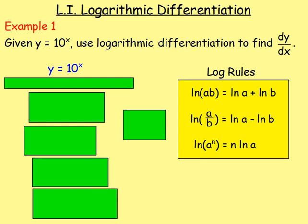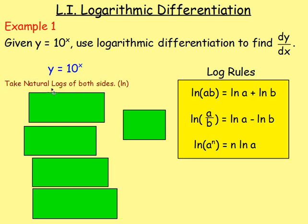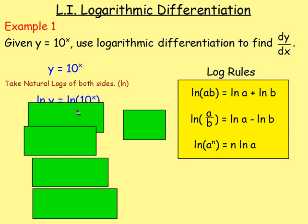Example one: given y = 10^x, use logarithmic differentiation to find dy/dx. How would you know to use logarithmic differentiation if it didn't tell you? Because x is an index — perfect. If x is in the index, you would take the natural logs of both sides in order to move the index down.